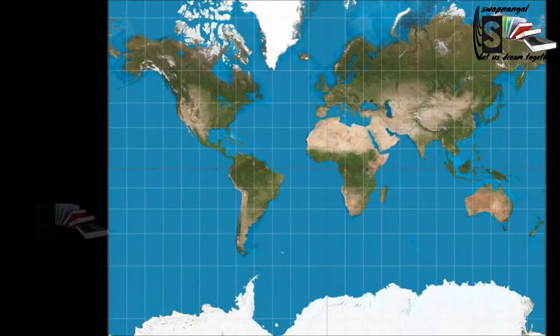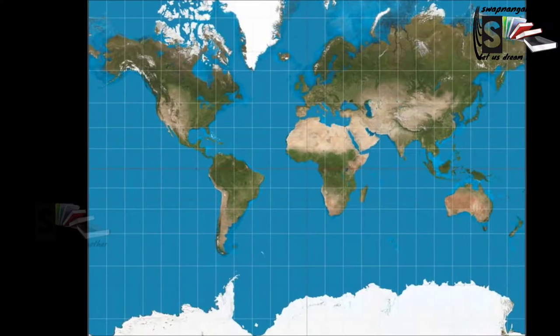Maps can also have grids on them. The grids make it easier for us to find places, rather than searching through the entire map.